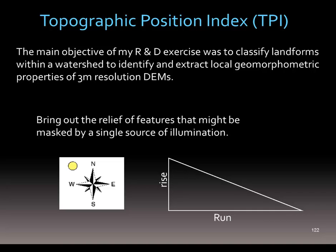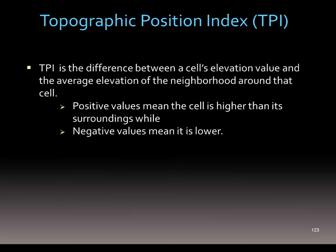The TPI helps us bring out the relief of features that might be masked by our illumination — features that are in the shadows of our hillshade. So by using the TPI in combination with our hillshade, our slope, and our aspect, we're able to properly digitize the landform features.